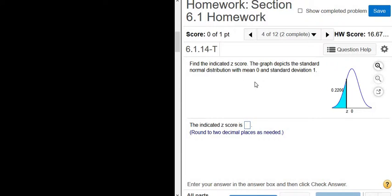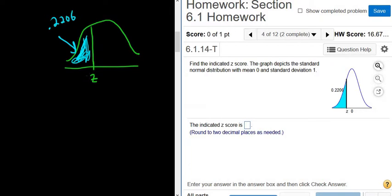Find the indicated z-score. In this problem, we're working backwards. Our graph looks like this. We have z here, and then we have a shaded blue area here. This number we're given, 0.2206, that's the area. So we're given the area and we want to find the z.